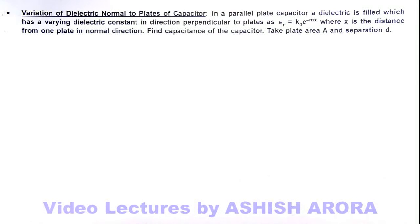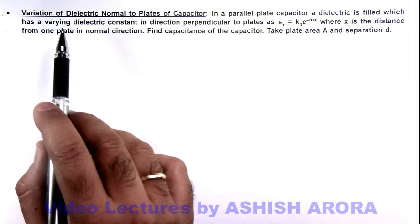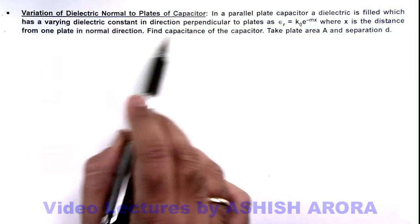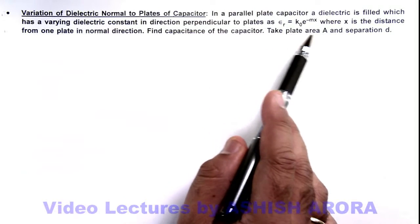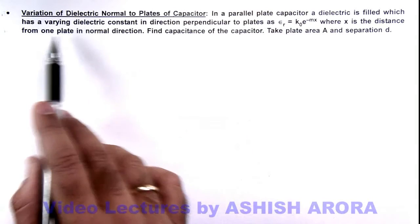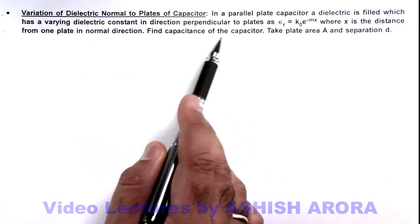In this illustration, we are going to discuss about variation of a dielectric normal to the plates of capacitor. Here we are given that in a parallel plate capacitor a dielectric is filled which has a varying dielectric constant in direction perpendicular to the plates.